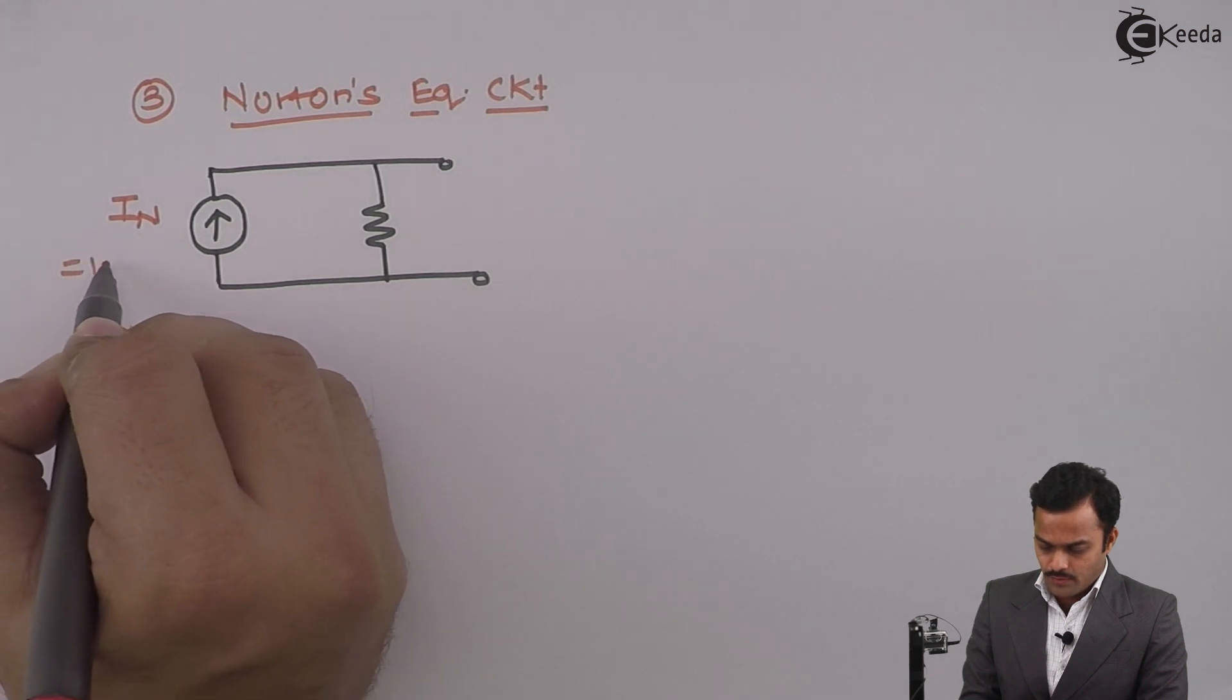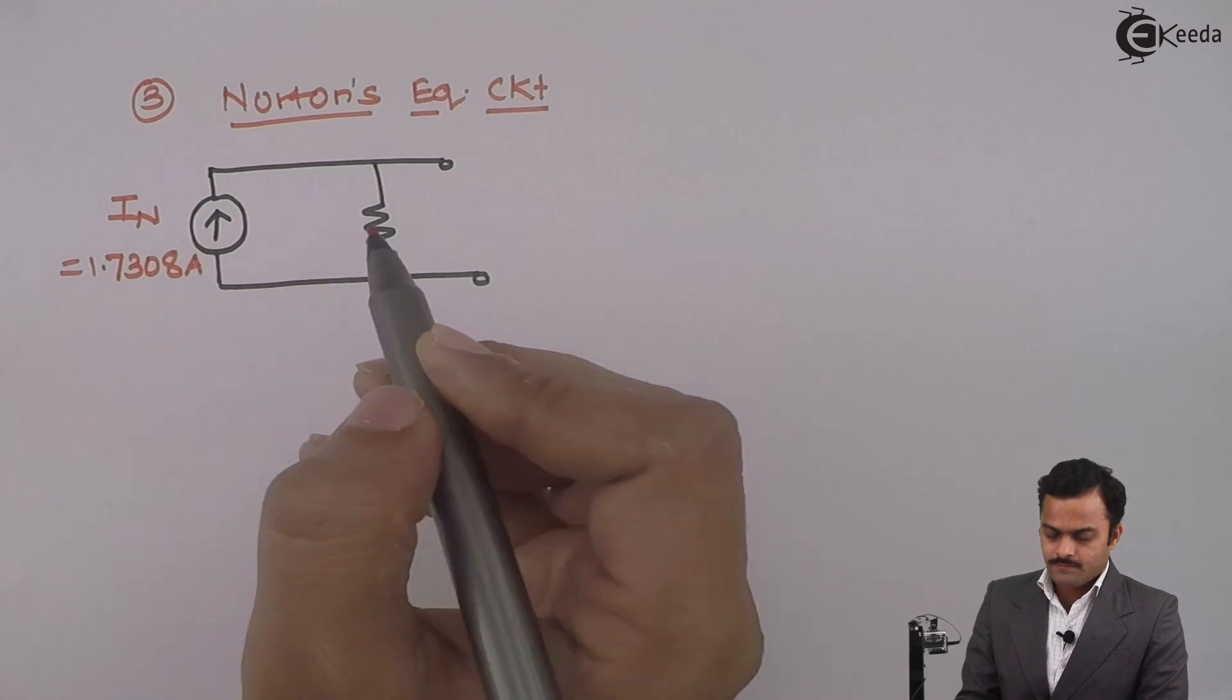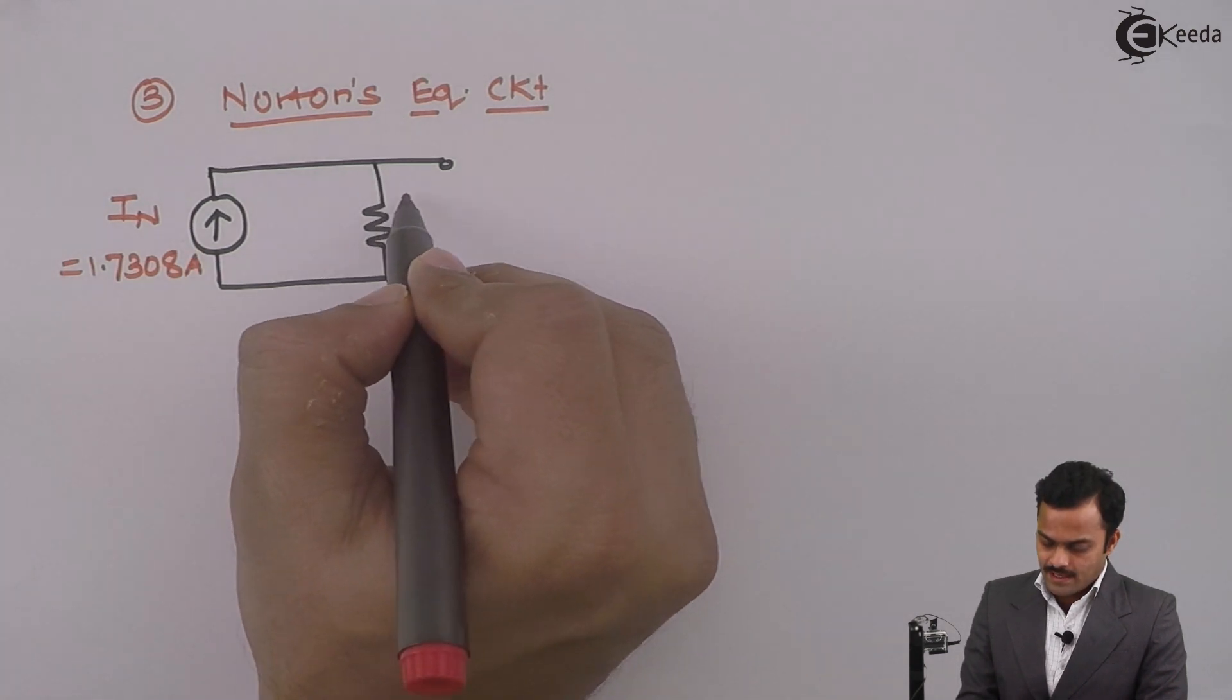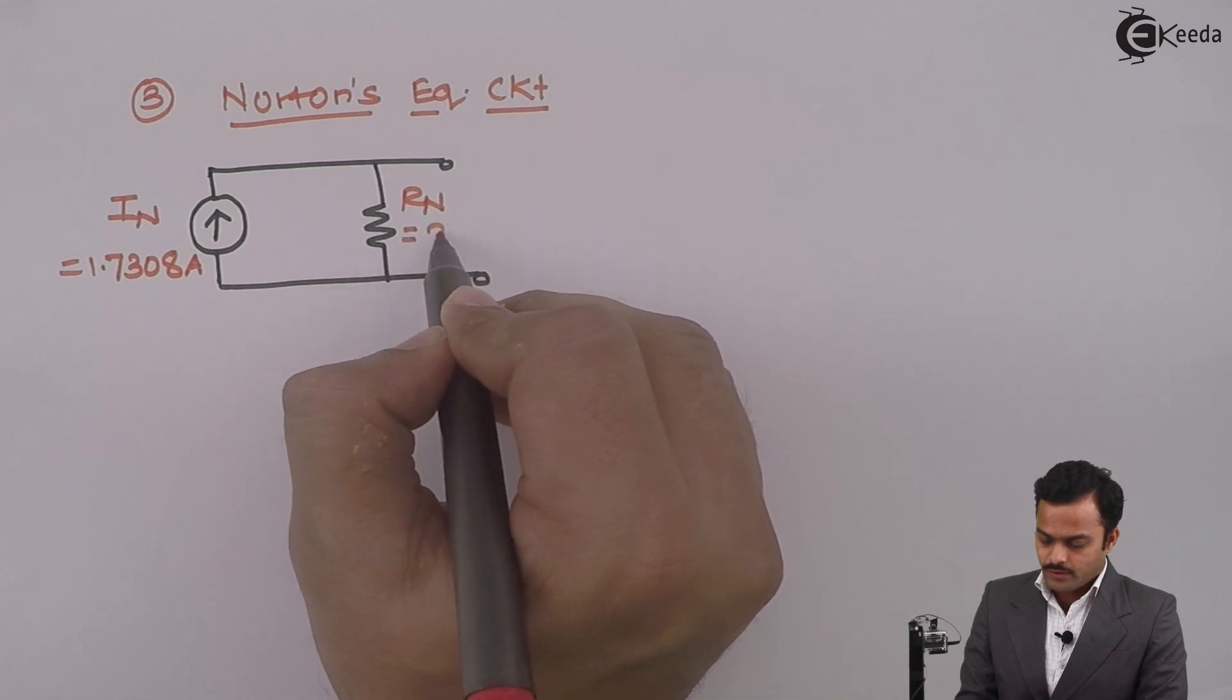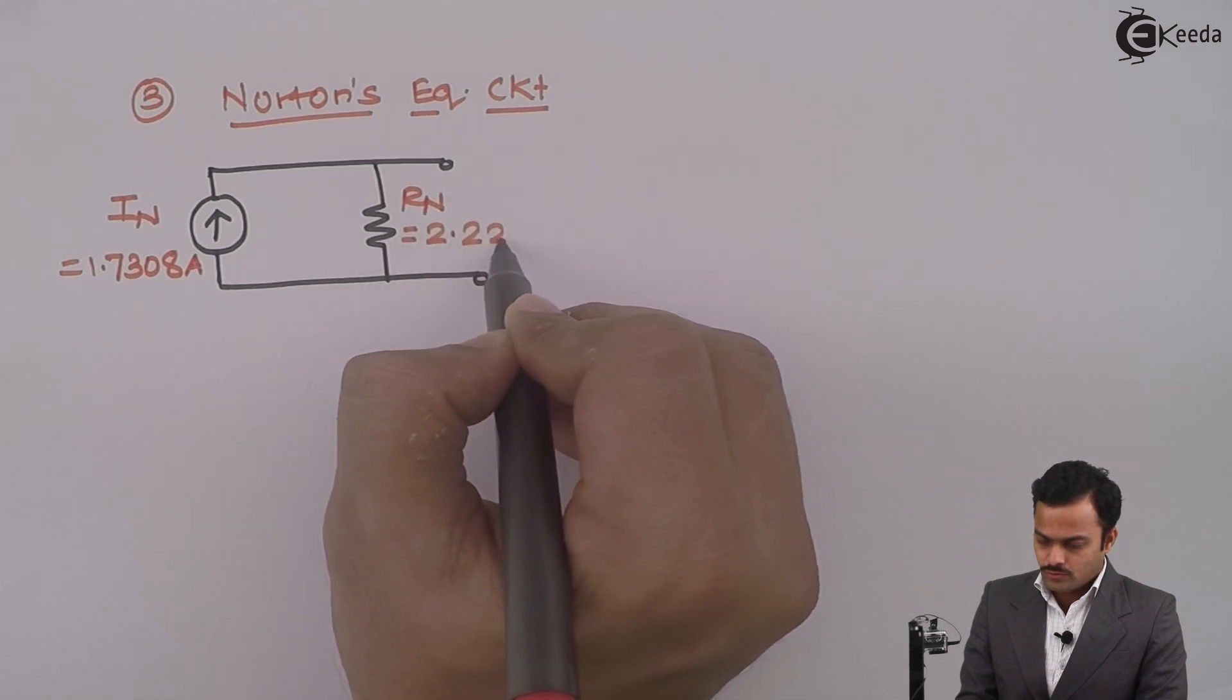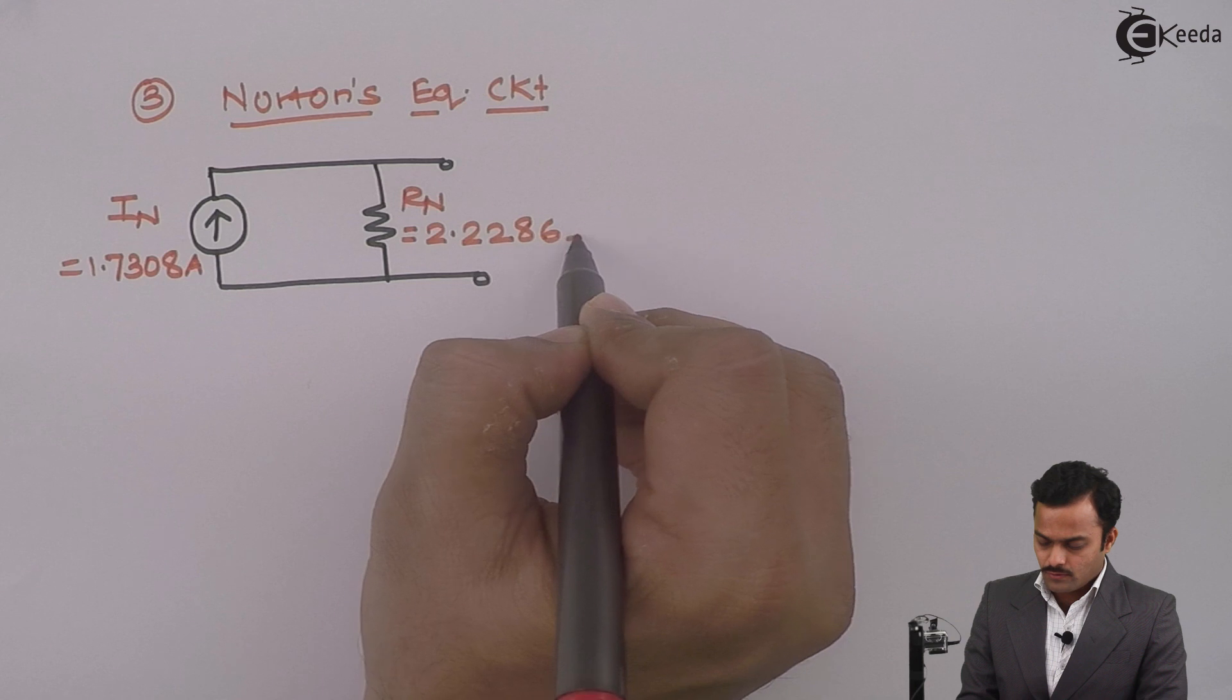In our case it is 1.7308 amperes. Resistance is RN, which is Norton's resistance. The value we got is 2.2286 ohms.